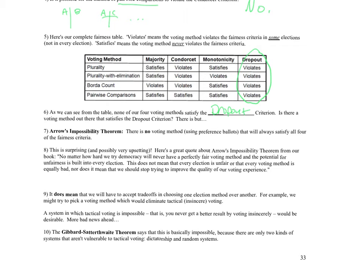We will have to accept trade-offs in choosing one election method over another. For example, we might want a voting method that eliminates tactical or insincere voting. However, the Gibbard-Satterthwaite theorem says this is basically impossible, because there are only two kinds of systems that aren't vulnerable to tactical voting: a dictatorship in which there is no voting, and random systems — anarchy — in which voting does not matter. That doesn't mean we can't try to minimize it.